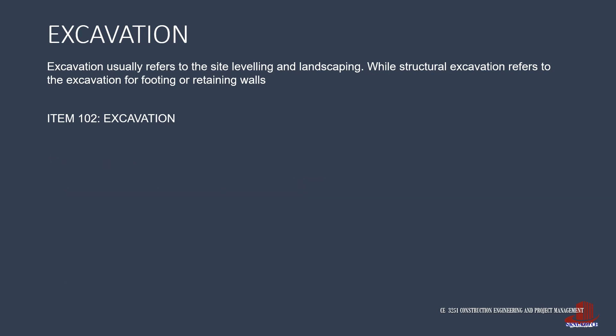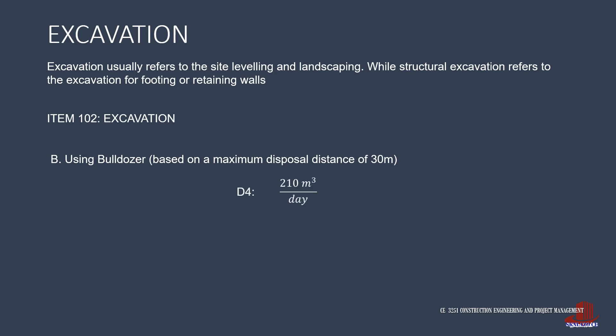The second part of Item 102 covers using equipment, with the condition that the distance for disposal is within 30 meters. A small dozer of model D4 can excavate 210 cubic meters per day. A D6 dozer can excavate 250 cubic meters per day. And a D8 dozer can work on 410 cubic meters per day.